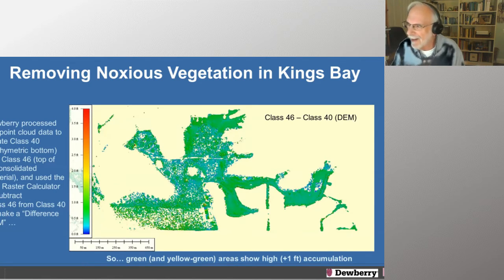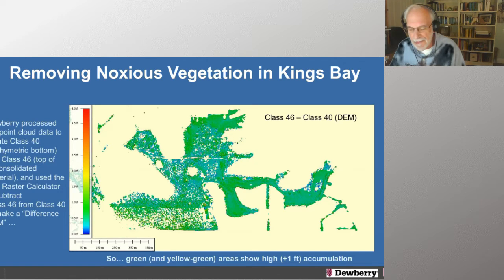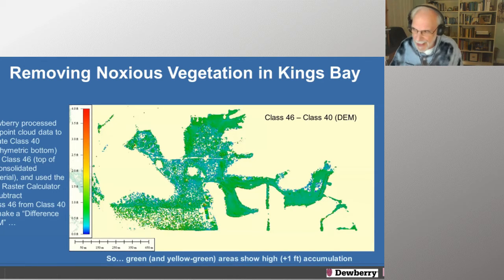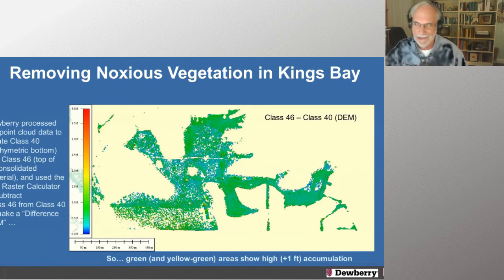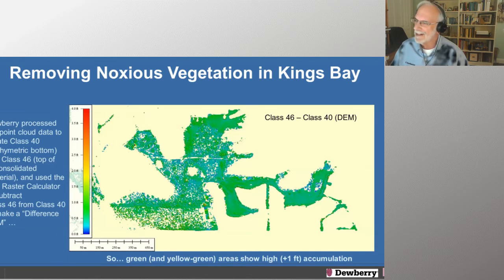We partnered with Dewberry, and Dewberry partnered with Jabilex, and we flew a Seasmill mission over the area. The green points represent what was determined to be bathymetric bottom, and the purplish points are the top of what I'll call unconsolidated material — the nutrients and the Lingbia. We call the area the Phoenix, and you can obviously see why. Dewberry constructed two surface models — one of the top of the material, one of the bottom — did a subtraction, and we calculated the volume of material to be removed.